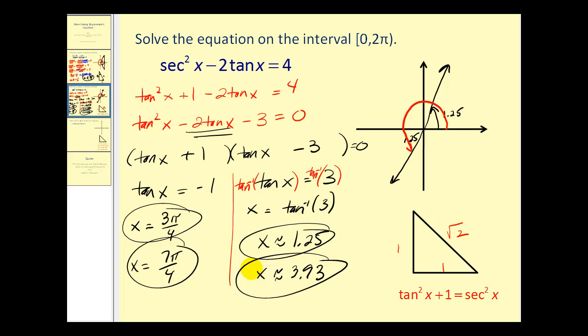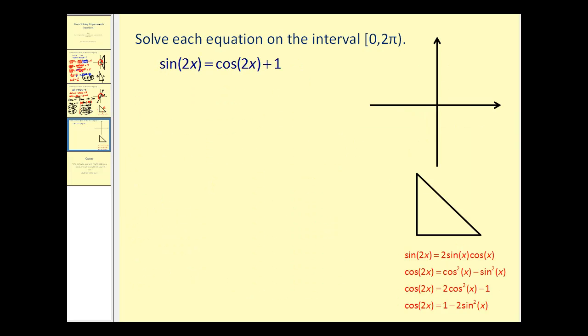So it looks like we have four different solutions for this equation. I think we have time for one more. Okay, on this last problem, we have two different trig functions, both with double angles. So what we'll try to do is use these double angle identities and perform some substitutions to make this easier to solve.